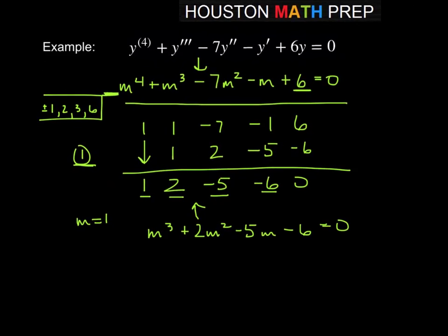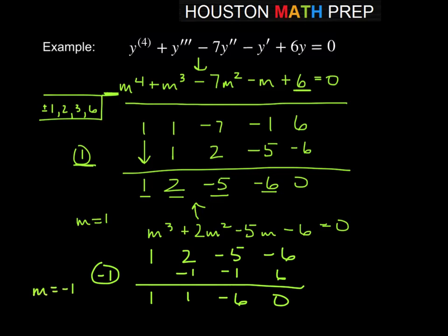So then we would be going off of these numbers again, or maybe you know how to factor this already. So 1, 2, negative 5, negative 6. We might try, say, like negative 1 this time now. So testing negative 1. If we do that, that will give us a remainder of 0 also. So we know negative 1 is also a 0. So we have m equals negative 1 is also a 0. And then over here,